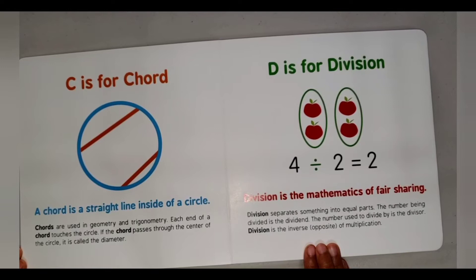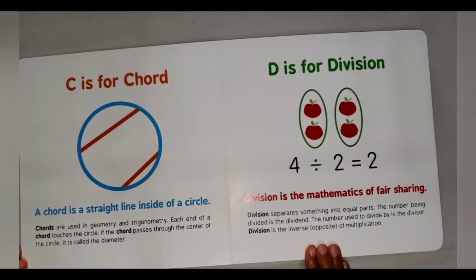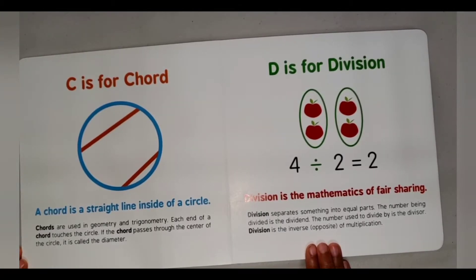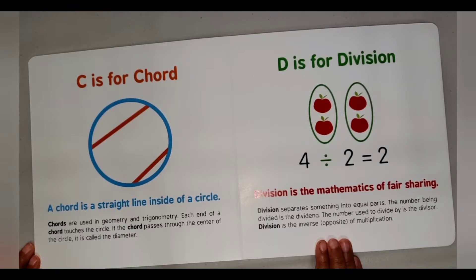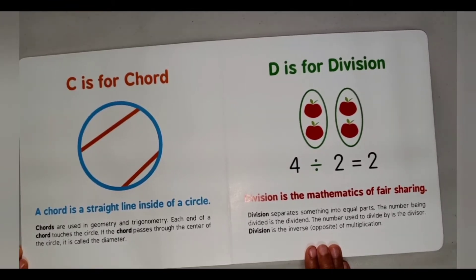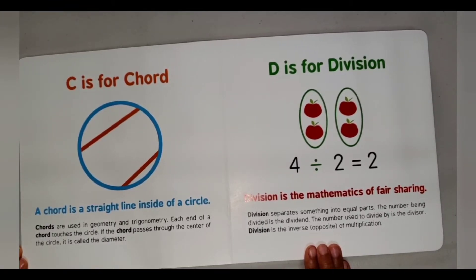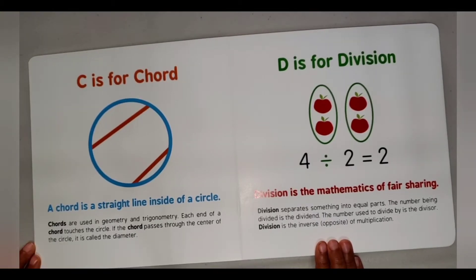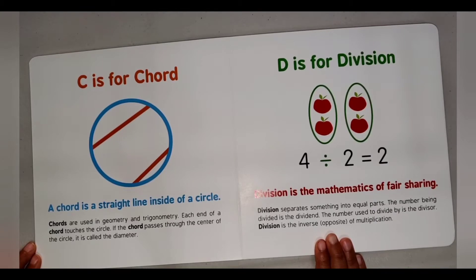D is for Division. Division is the mathematics of fair sharing. Division separates something into equal parts. The number being divided is the dividend. The number used to divide by is the divisor. Division is the inverse opposite of multiplication.